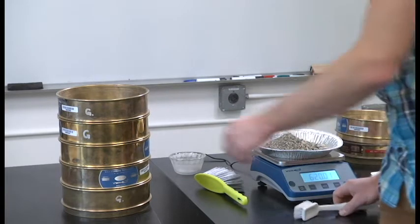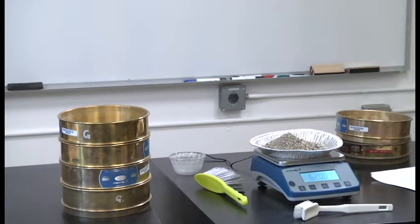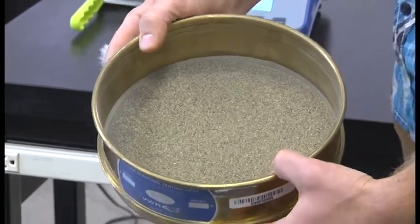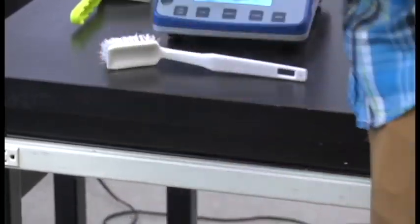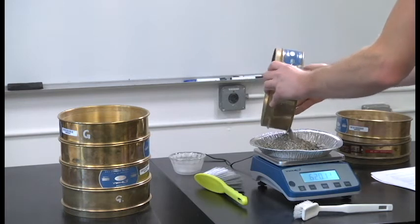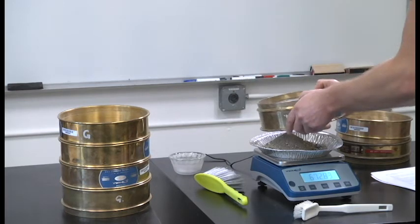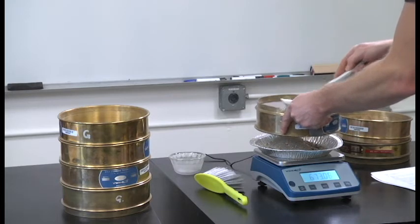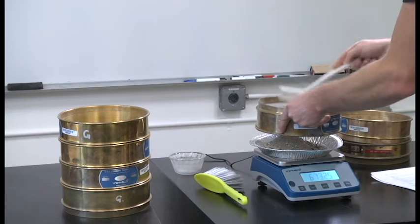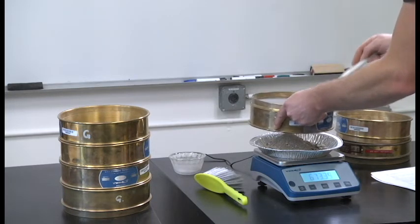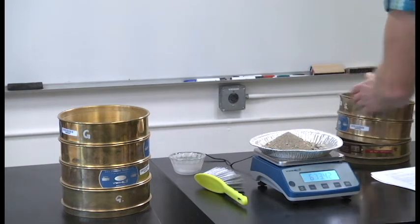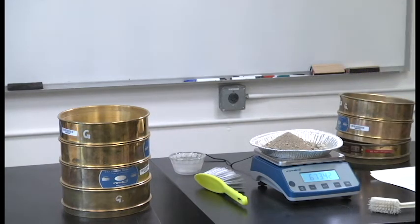I'll keep doing that as I go down the stack. Now we've got the number forty sieve. You can see we're getting into sand-sized particles here. Nice clean sand. I'll tap and make sure I get all the particles out of the sieve. Cumulative mass: 673.43 grams.